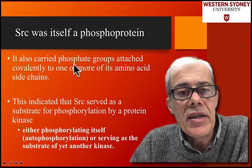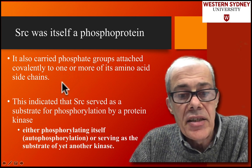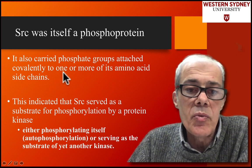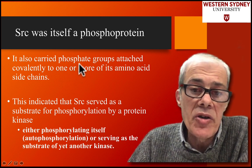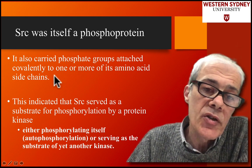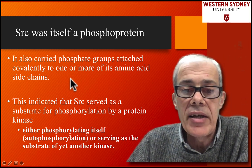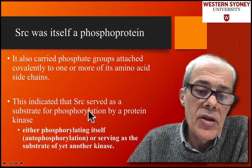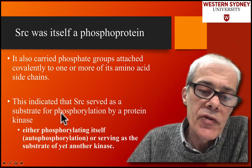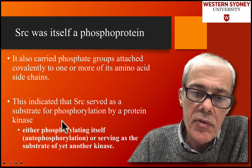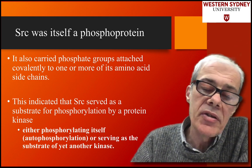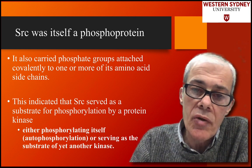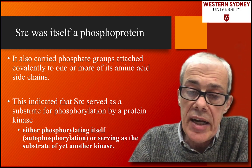It turns out that Src was a tyrosine kinase, and it also contained groups in the Src protein that were phosphorylated themselves. So it was phosphorylated, and it could phosphorylate either itself or other things. This idea of autophosphorylation to regulate itself is an important metaphor, because that's what the tyrosine kinase receptors are doing — they're autophosphorylating themselves to regulate themselves.